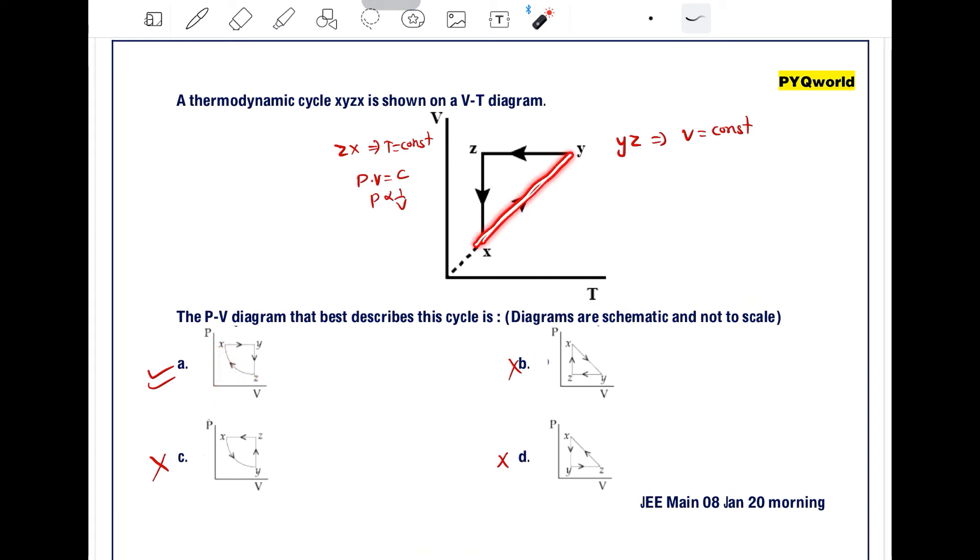Remaining is the x-y process. To find the equivalent graph, just find the slope. So slope is equal to V by T. We know that slope is constant. So if slope is constant, volume is directly proportional to temperature. According to the ideal gas equation, PV equals NRT. So V by T equals 1 by P. The slope is inversely proportional to pressure. So in this case, pressure is constant.